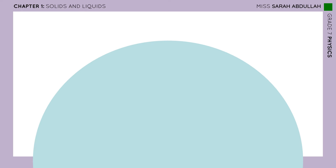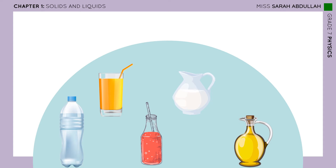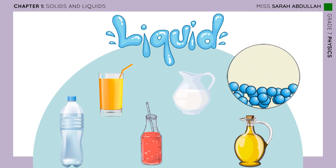Now, when I say liquid, what is the first thing that comes to your mind? Of course, the water we drink. How about some strawberry juice, orange juice, or any juice? Maybe some milk or olive oil. These all have different colors and taste differently, but they all have one property in common — they are all liquids.